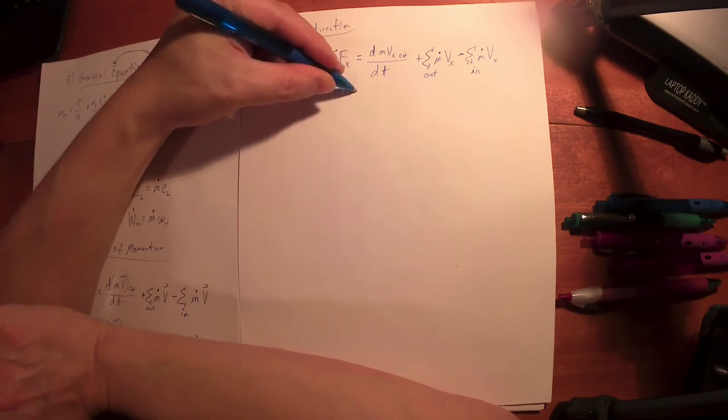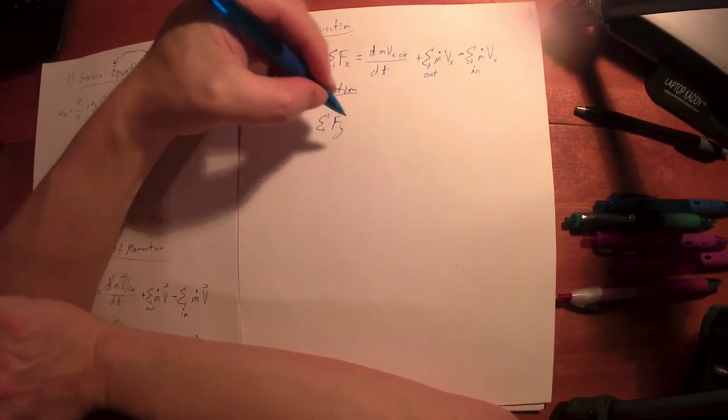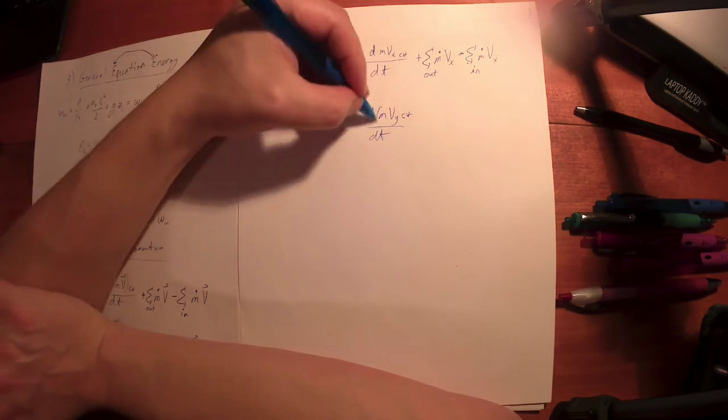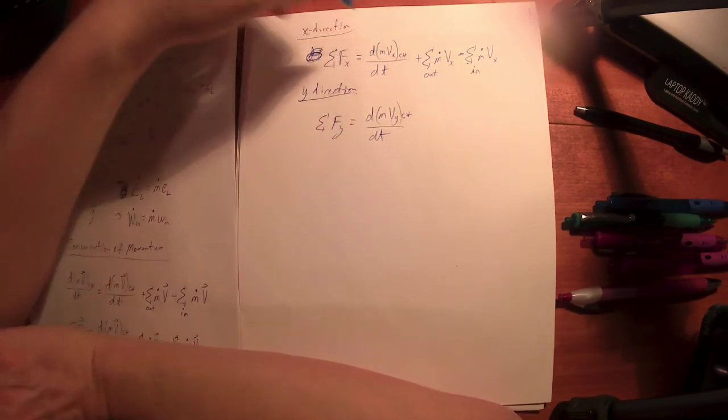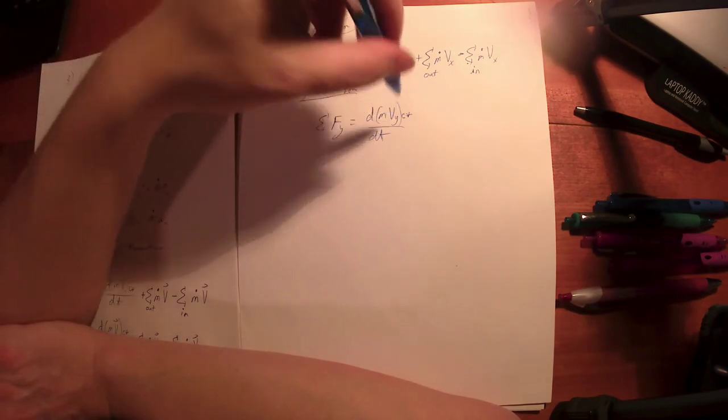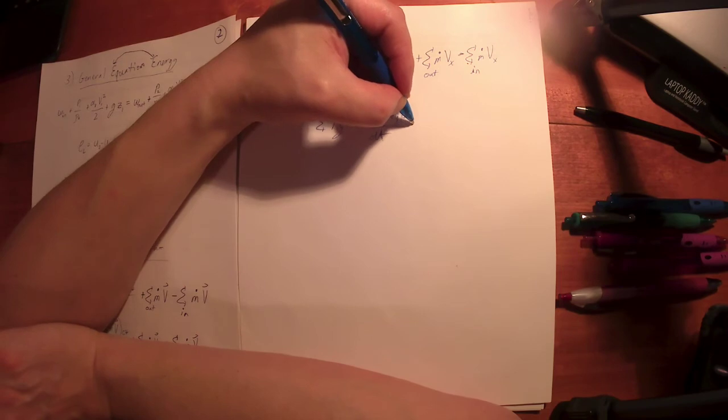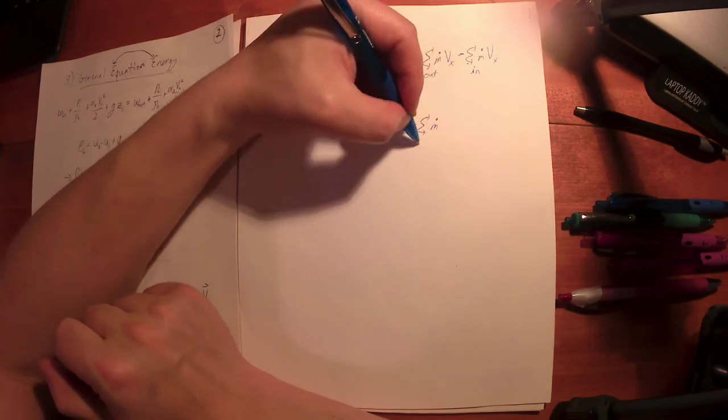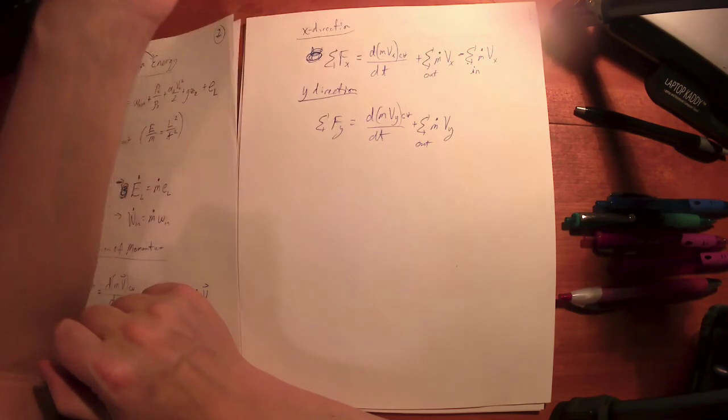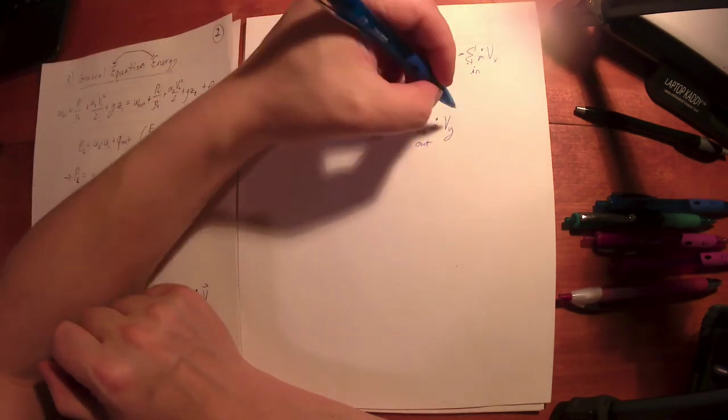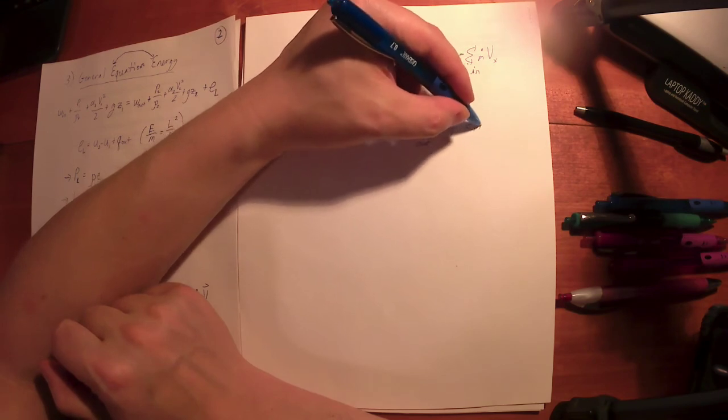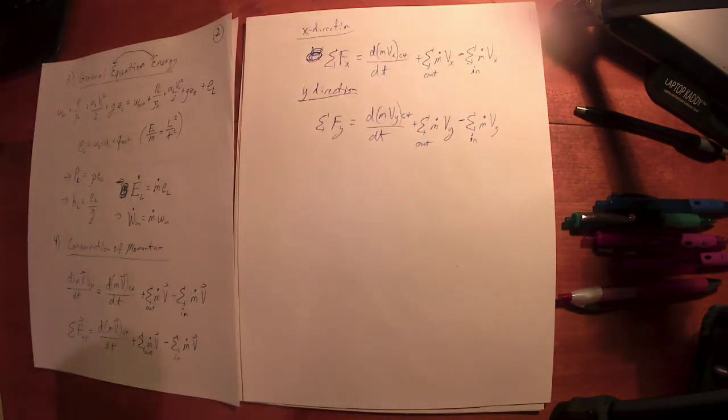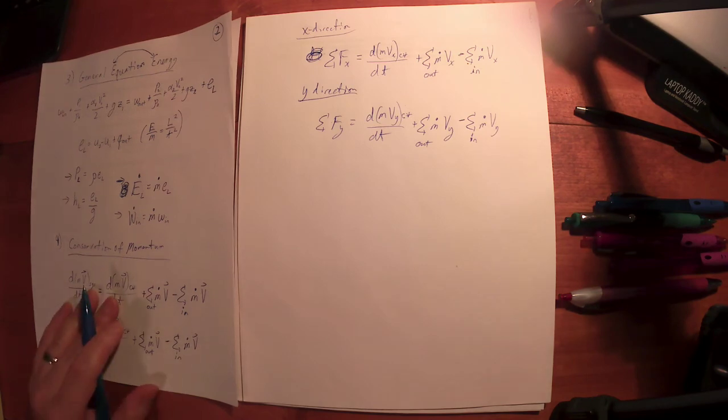Some forces, add up all the forces in the y direction, that equals the momentum change in the y direction for the control volume with respect to time, which again, a lot of times, we're looking for what is the force required to keep the control volume stationary, so most of the time this goes to zero. And not having, I'm not assuming you've had differential equations yet, so that's kind of the common thing that will happen, is we'll just simplify it to zero. But if it's not stationary, we've got to do something different. Again, the total rate of momentum going out in the y direction, minus the total rate of momentum coming in the y direction.